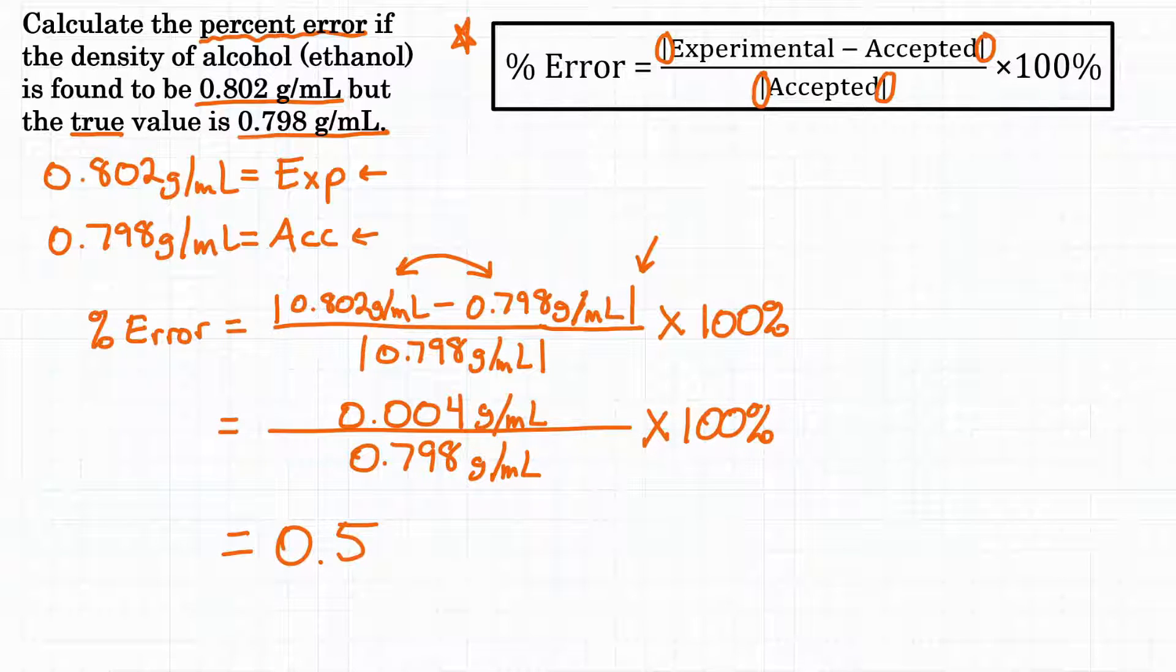So our answer here is 0.5. And for our units in the fraction above we had grams per milliliter over grams per milliliter. So they're going to cancel because they're on top and on bottom. And we'll be left with just a percent sign. And that makes sense because we're solving for percent error.